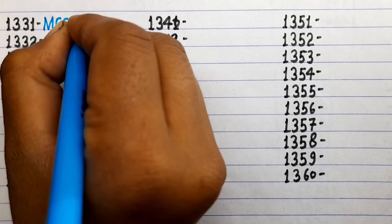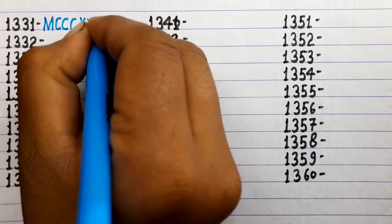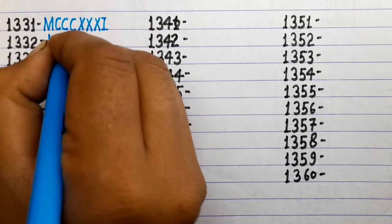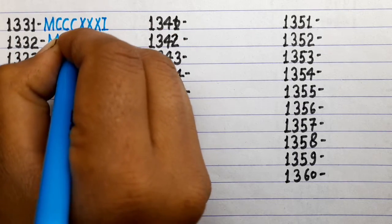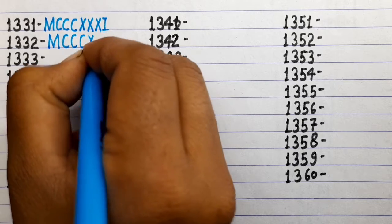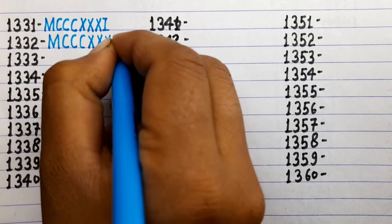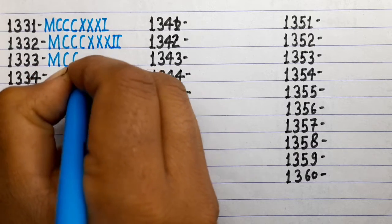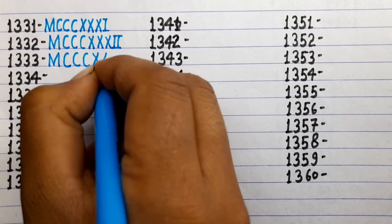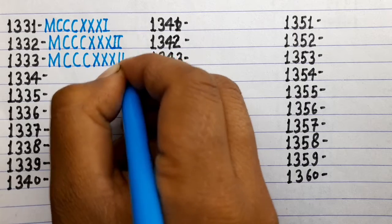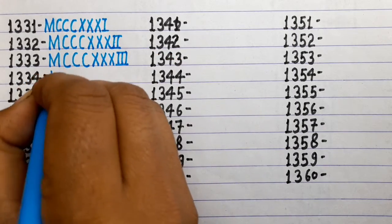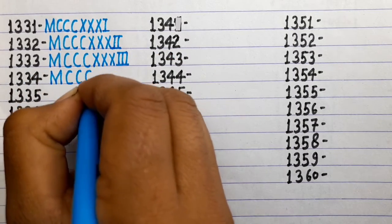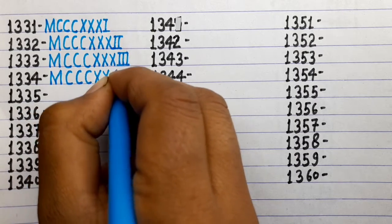1331 is MCCCXXXI. 1332 is MCCCXXXII. 1333 is MCCCXXXIII. 1334 is MCCCXXXIV.